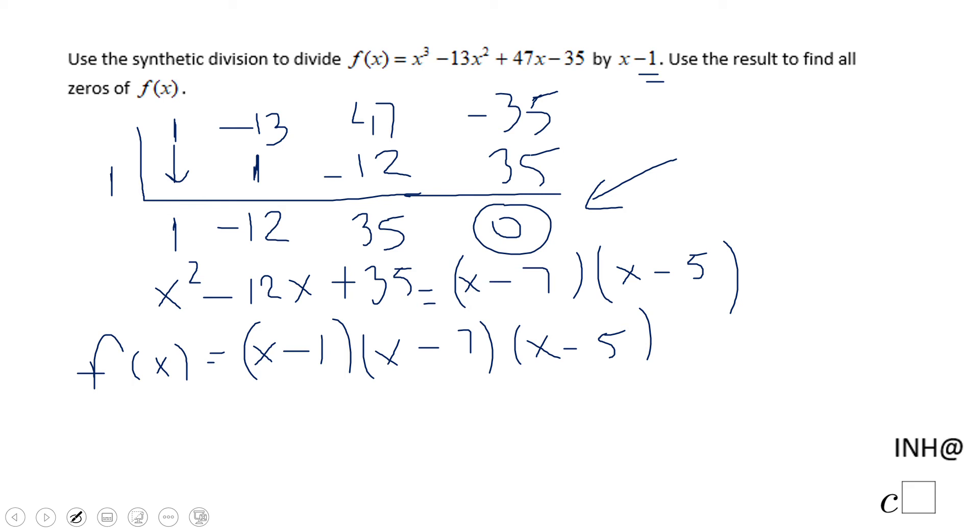So how do we find the zeros? We set each factor equal to 0. x minus 1 equals 0 gives us x equals 1.